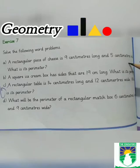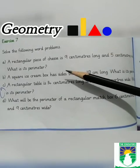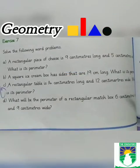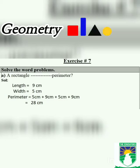Class, as you know, perimeter is the total distance around a shape, so we add all the sides. Length is equal to 9 centimeters, width is equal to 5 centimeters. The perimeter is equal to 5 centimeters plus 9 centimeters plus 5 centimeters plus 9 centimeters, which equals 28 centimeters.